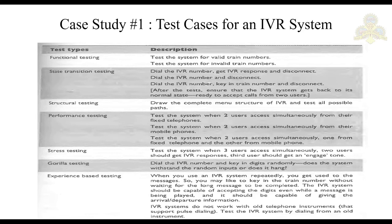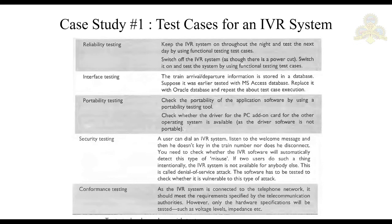Gorilla testing involves randomly dialing some number and checking what response you get. For experience-based testing of the IVR system, when you use the system repeatedly, you get used to it — you know what messages appear for various inputs. For example, you may try keying in the train number without waiting for the full message to complete, based on your familiarity with the system.